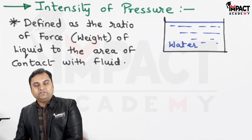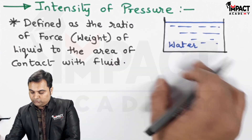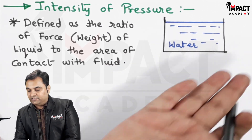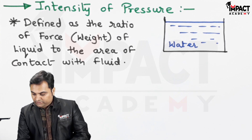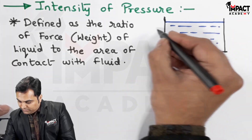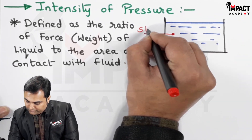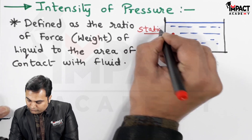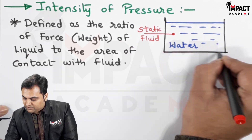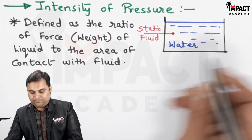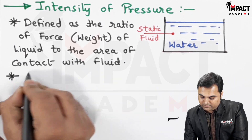It is defined as the ratio of force or weight of the liquid to the area in contact with the fluid that is at the bottom. The condition is that the fluid should be a static fluid — it should not be a moving fluid — so it is exerting a pressure at the bottom.